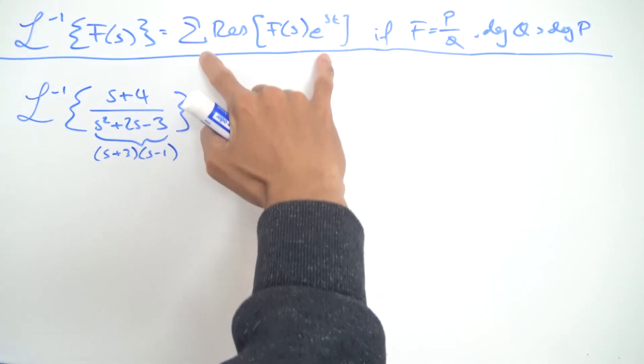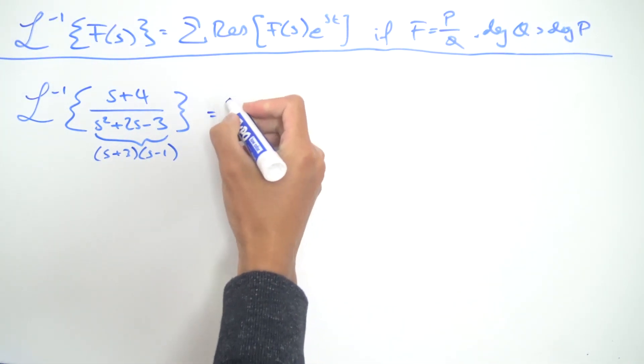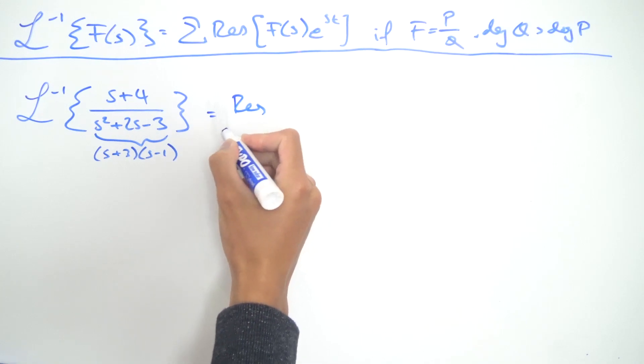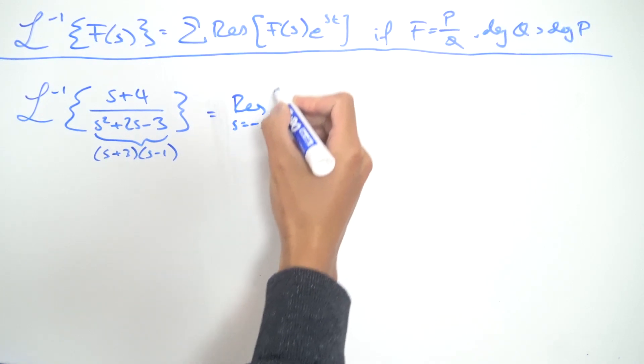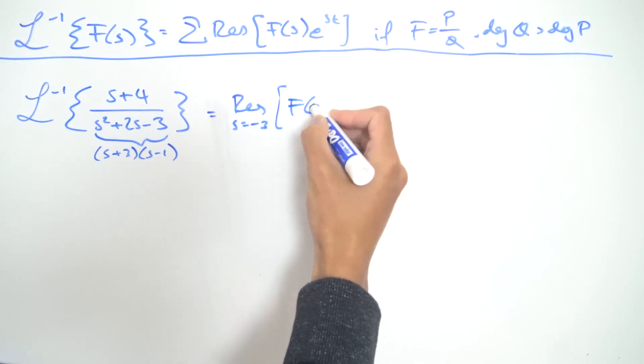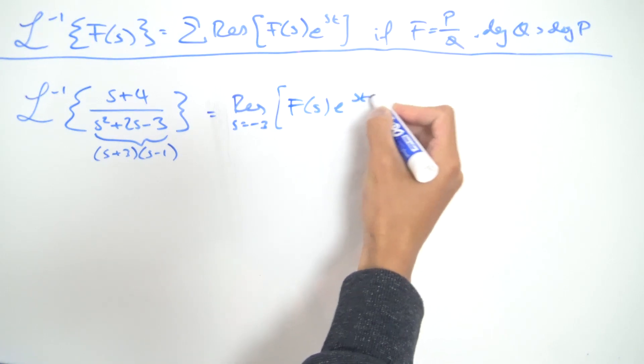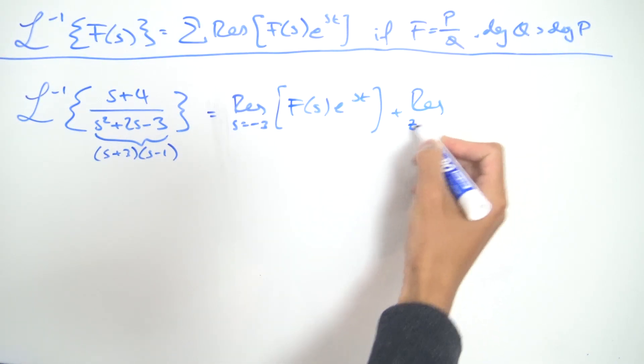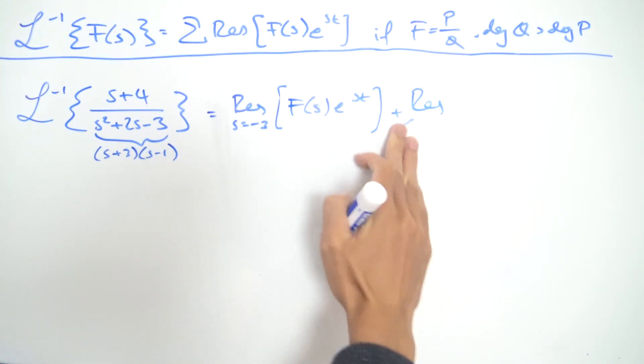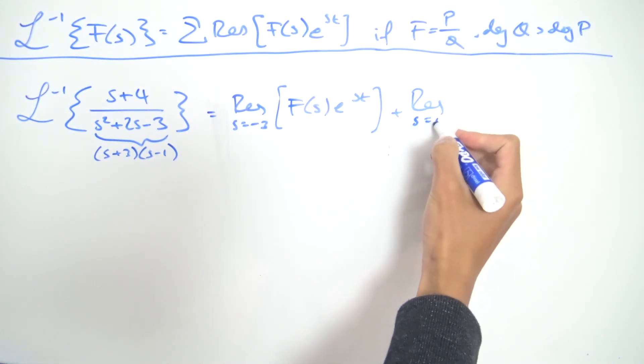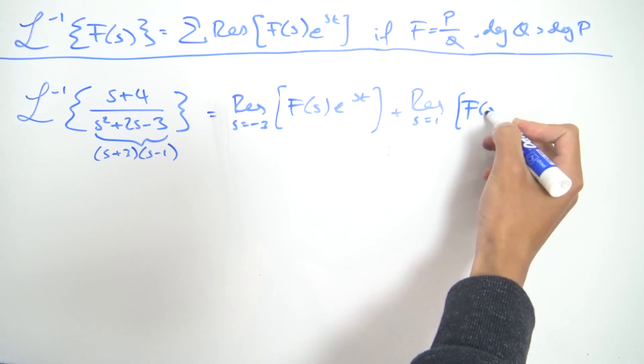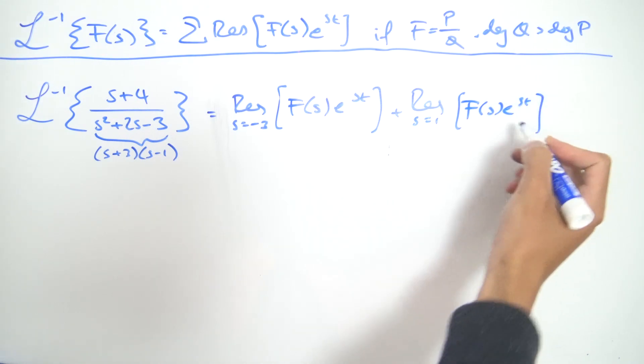So we can rewrite this using this formula the sum of the residues as being the residue at s equals minus three of f(s) times e^(st), and then we have another residue at s equals one of f(s) times e^(st) like so.